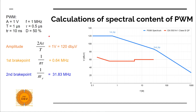Using the equations from the previous slide, our amplitude equals 1 volt, which is equal to 120 dBmV. This is the maximum amplitude of spectral content for this signal, visible on our envelope. The first breakpoint is 0.64 MHz and the second breakpoint is 31.83 MHz. The first breakpoint being under 1 MHz confirms our calculation is correct.